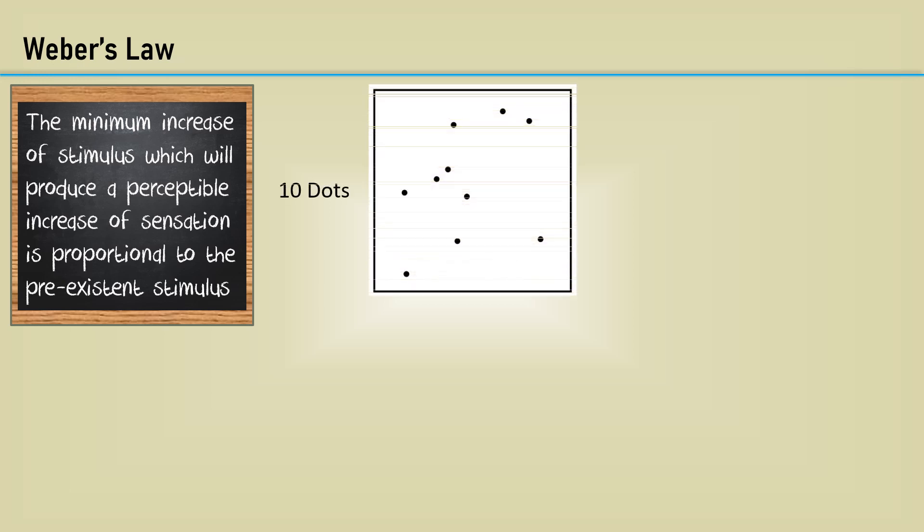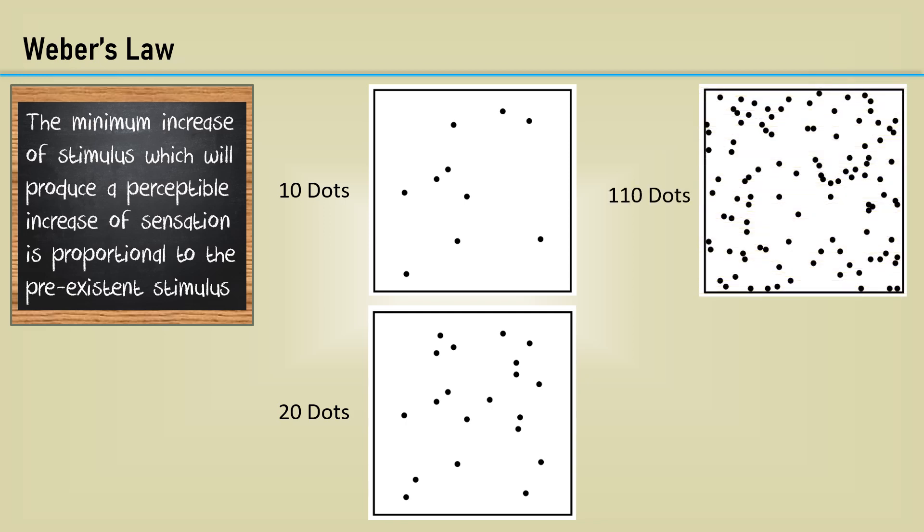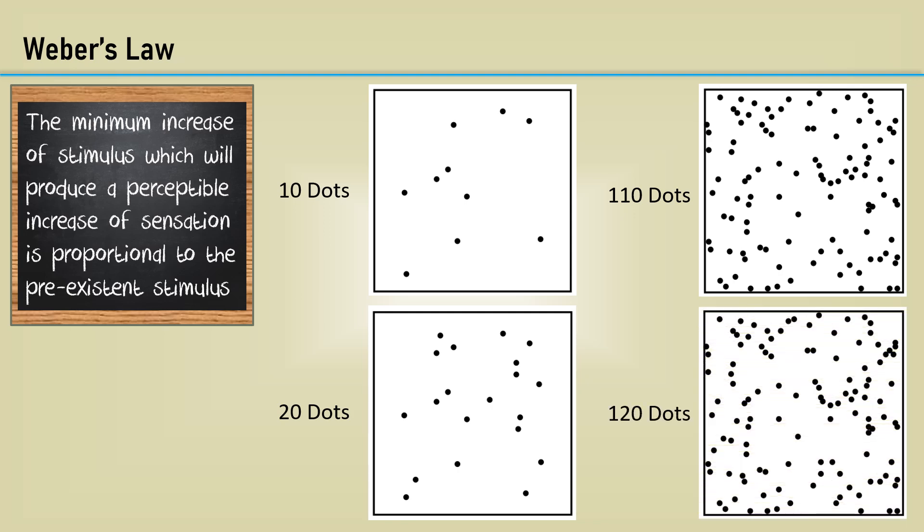Here's a square of 10 dots randomly spaced within. Here's the same square with 20 dots. It's visually apparent there are double the amount of dots. Here's the square with 110 dots. Let's add 10 dots to that. It's hard to see much of any change. I'll go ahead and color over those dots that were added.